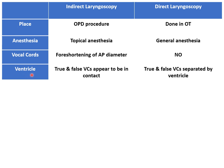The ventricle is the area between the true and the false vocal cords. In indirect laryngeal examination, the true and the false vocal cords appear to be in contact — that is, there is no depth perception — so we cannot see the ventricle. While in direct laryngeal examination, the true and the false vocal cords appear to be separated by a space called the ventricle.